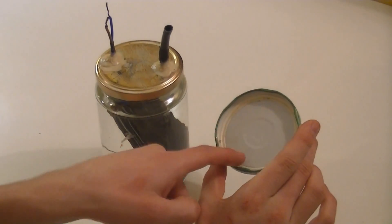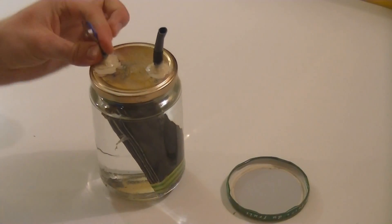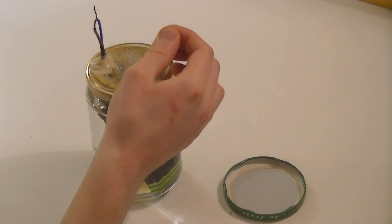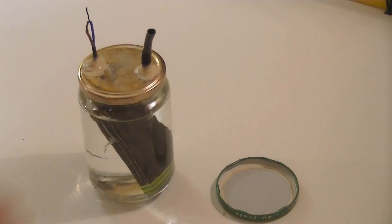Next, drill two holes in lids, one to let the wires out and one for the gas output pipe. Don't forget to glue the lid to the jar.